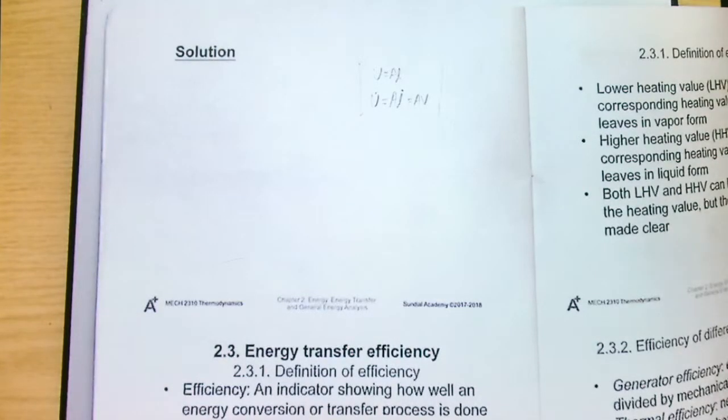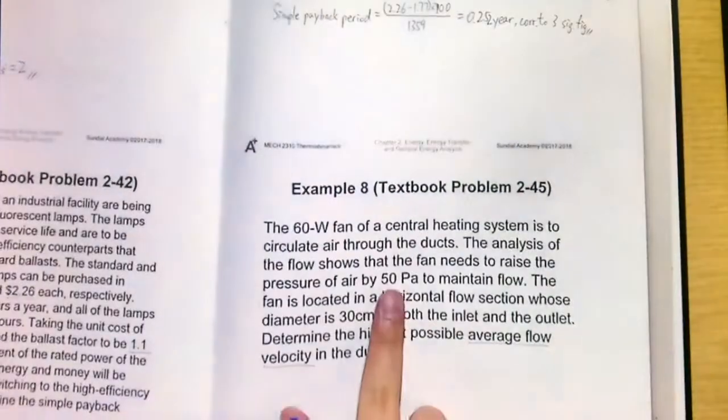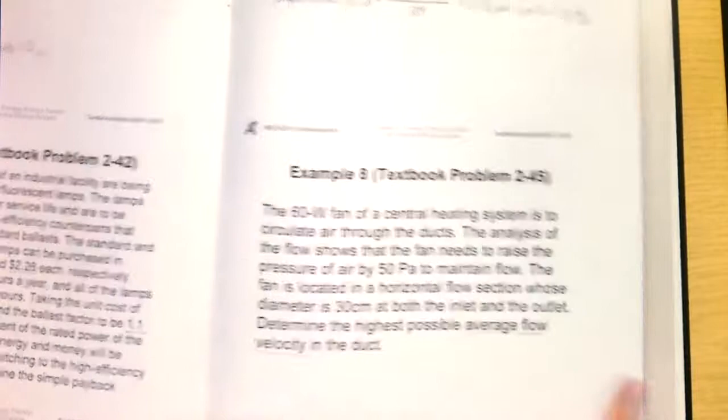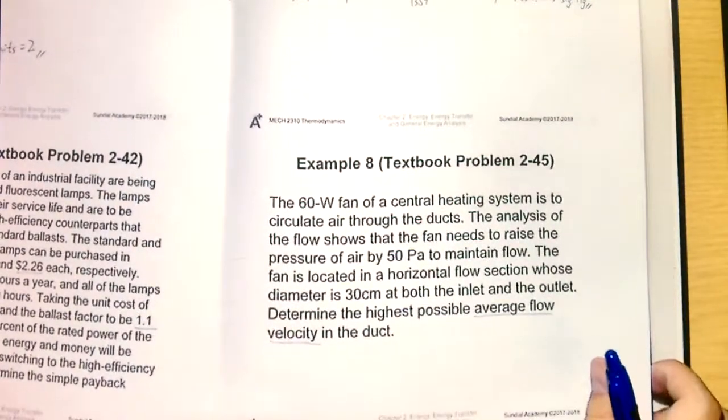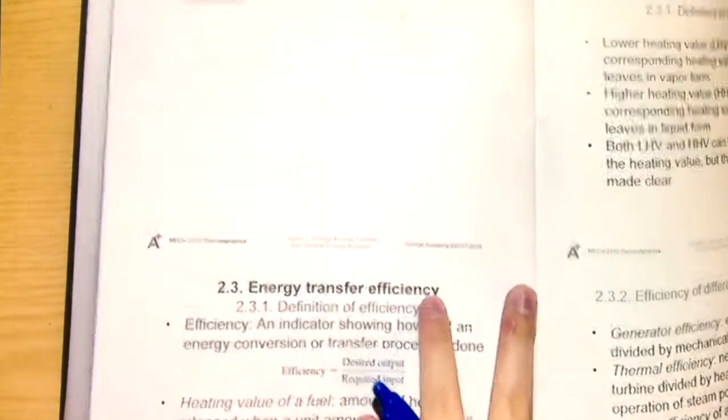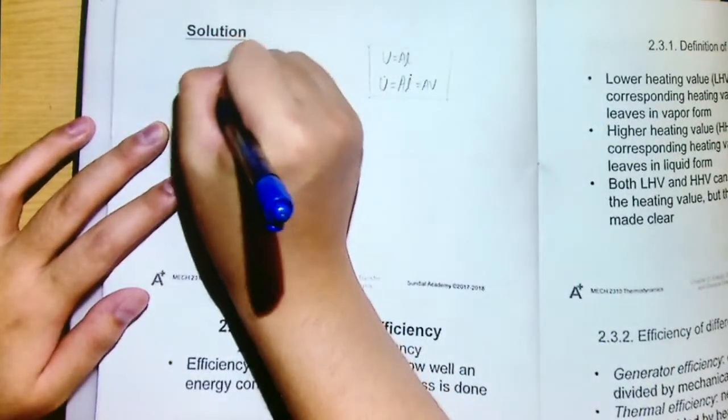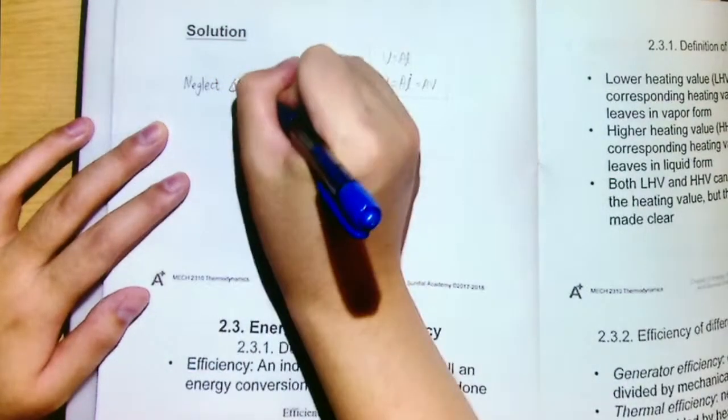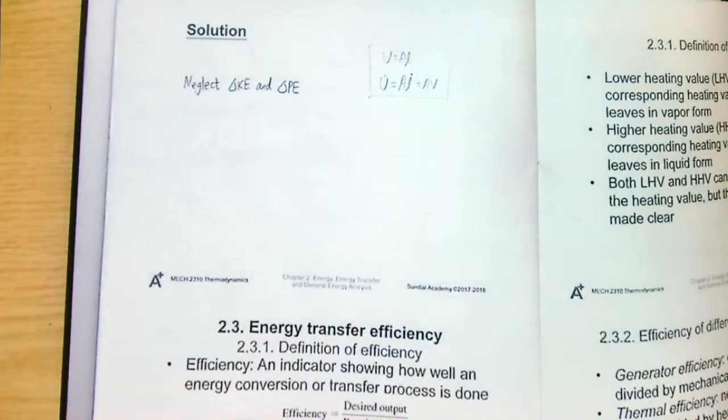So here, because we only have the change in pressure, that's 50 Pa, and we only have the diameter as well as this 60 W, nothing else, we will do some assumptions to simplify the calculation. One of them is that we will neglect delta KE as well as delta PE. For delta PE, because it's a horizontal flow section, so we will neglect that.